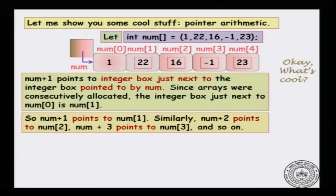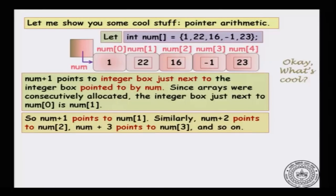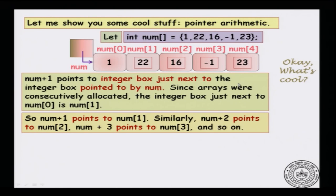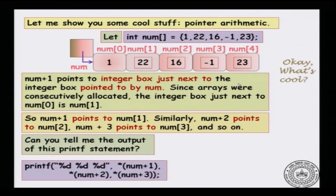num plus 1 points to num[1]; similarly, num plus 2 points to num[2], and so on until num plus 4 equals num[4]. So this particular box, num[4], can be accessed in two ways: you can write num[4], or you can write *(num + 4).